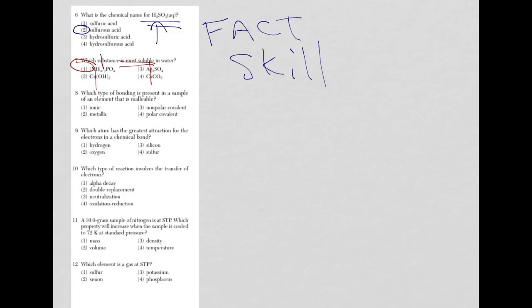For question 8, it says which type of bonding is present in a sample of an element that is malleable. This is a fact of any kind of metal or metallic bonding, which is choice 2. Let's move on.